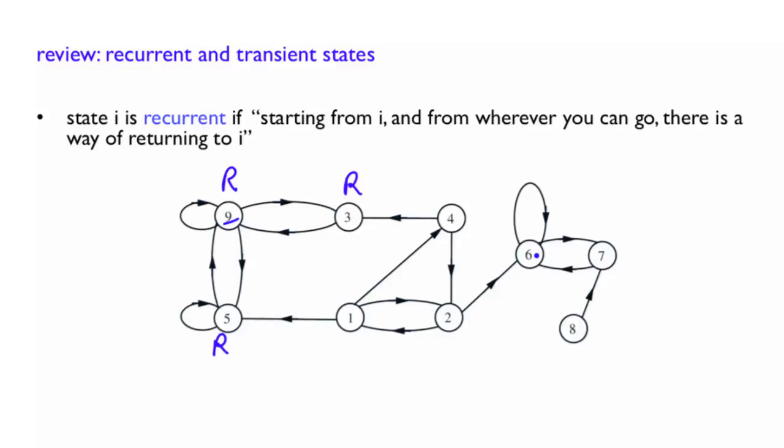Now, if you look at state 6 or 7, it is the same thing. Starting from 6, the only way you can go is either stay at 6 or go to 7, and then in that case you always come back. Same thing from 7. You can either go to 6, that's it actually, and come back. So both of these are recurrent as well.